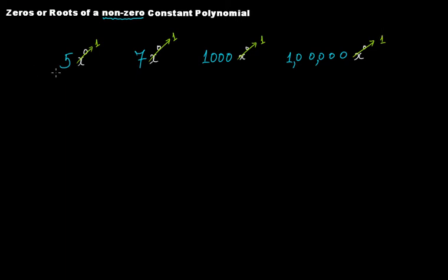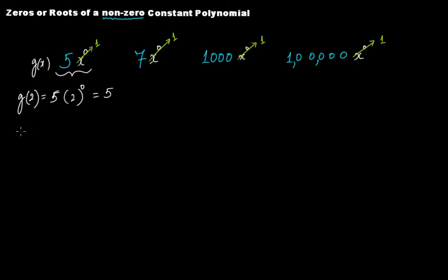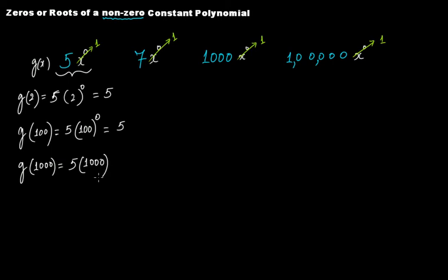So if you take this polynomial — let's call it g(x) equal to five — and you put g(2), at the place of x you put two: five multiplied by two raised to the power of zero gives you five. You put g(100): 100 raised to the power of zero means you again get five. You put g(1000): 1000 raised to the power of zero, that is again five. It means that no matter what value you put at the place of x, you're always going to get five for this particular polynomial.